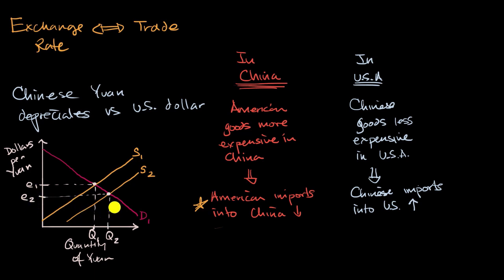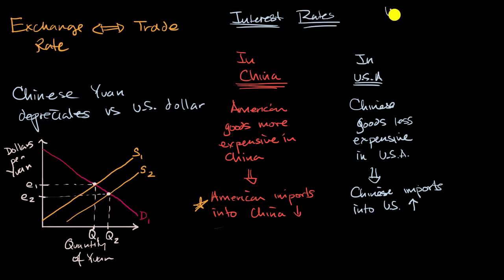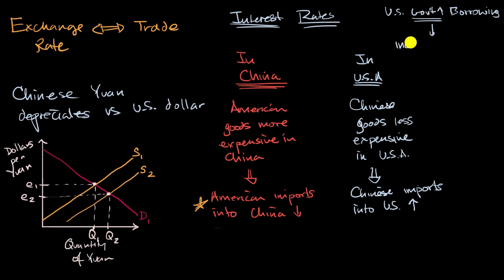In previous videos, we've talked about many factors that could shift the supply or demand curve for a currency. Now it would be interesting to think about the effects of interest rate changes in each country, linking them not just to supply and demand but to trade. Let's imagine a situation where the US government increases borrowing. As we've discussed, that will likely lead to increased interest rates — there could even be a crowding out effect — increasing interest rates in the US.